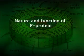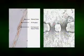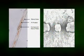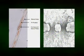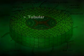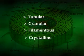Now, the nature and function of P-proteins. P-proteins occur in both dicotyledons and monocotyledons but are absent from gymnosperms and lower vascular plants. As observed with the electron microscope, P-protein, called slime in the older literature, occurs in several forms: tubular, granular, filamentous and crystalline.